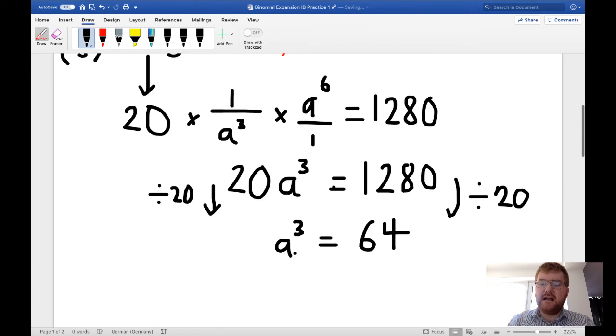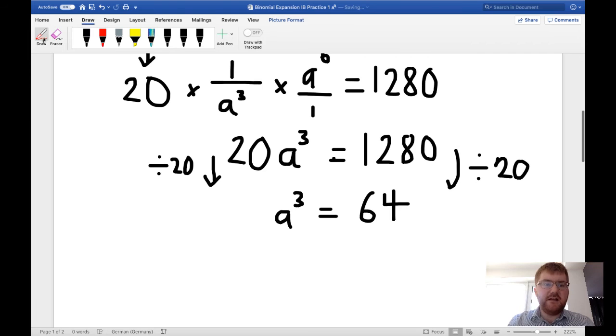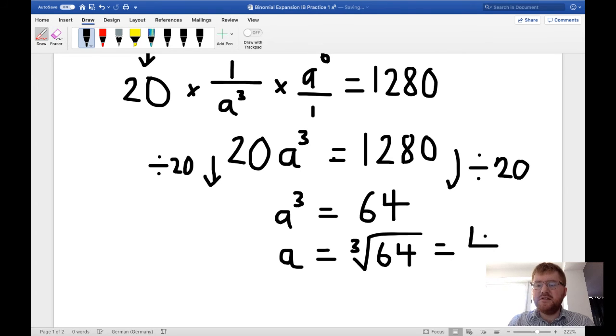And then to get a on its own, remember we're not square rooting here, we're actually cube rooting. So a is the cube root of 64, and that's now equal to 4.